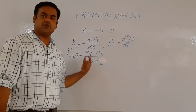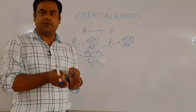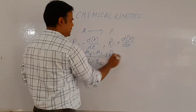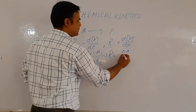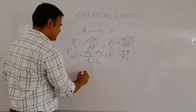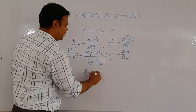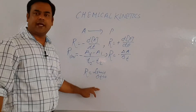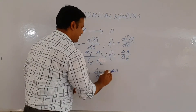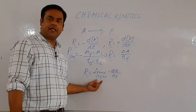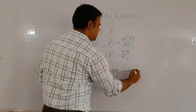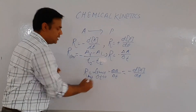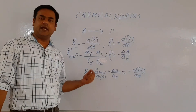To convert average rate into instantaneous rate, we take a very small time interval and a very small change in concentration of reactant. For that we use the limit: R equals minus the limit as ΔT tends to 0 of ΔA/ΔT, which can be written as minus dA/dt. This rate R is called instantaneous rate because it tells us about the rate of reaction at any particular instant.